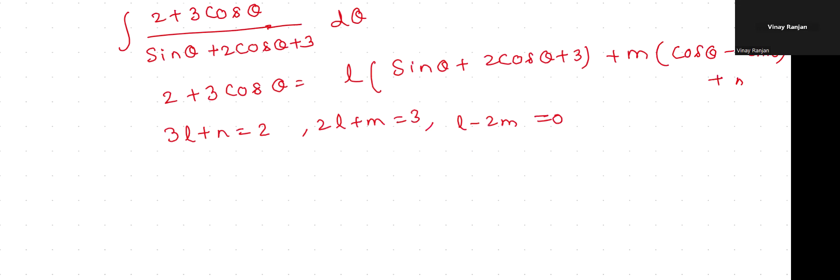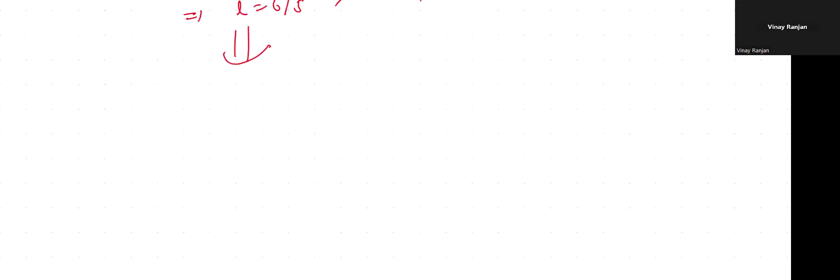This implies that l equals 6 upon 5, m equals 3 upon 5, and n equals minus 8 upon 5. Once you get that, now the whole thing you can write and get your answers. Simple. Next type of questions.